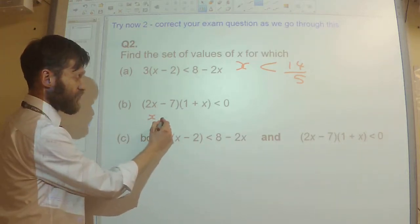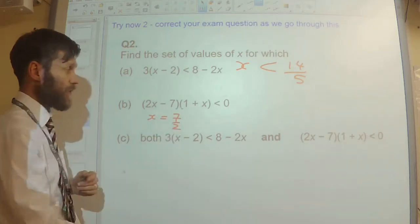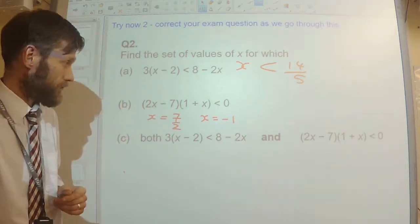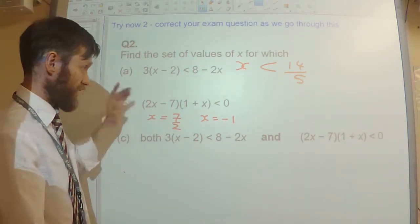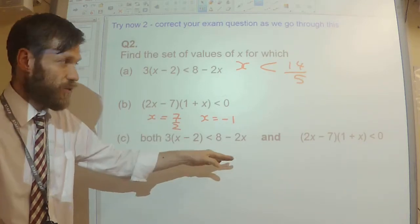We can see our critical points, it will be equal to 0 when x is 7 over 2. It will be equal to 0 when x is minus 1. So that's made it a bit easier for us because we don't need to do any factorisation, it's already factorised, we've got our critical points.